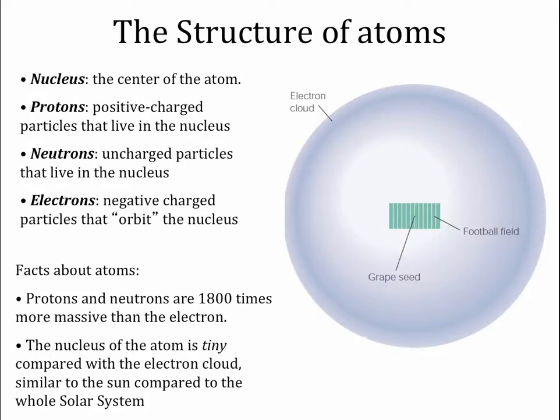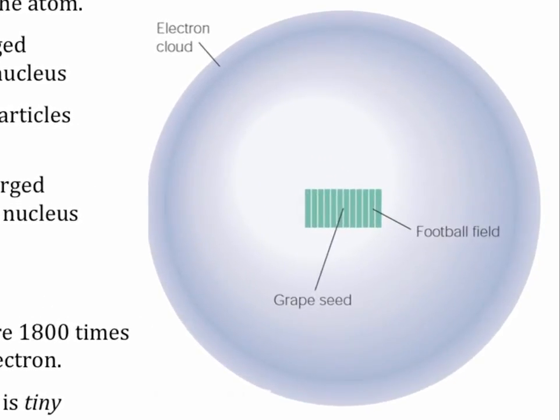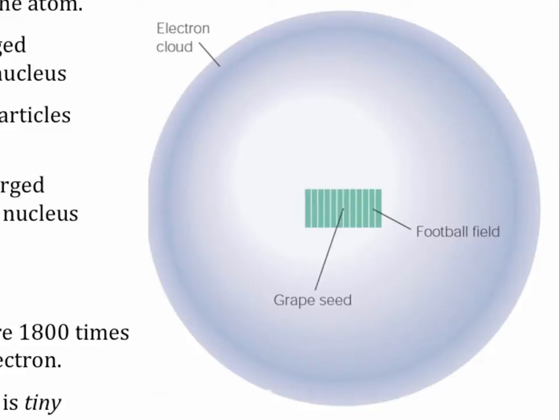Before we can discuss the interactions of light and atoms, let's review what an atom is. Here's a cartoon of an atom on the right and it shows how much empty space there is in an atom. If the nucleus of an atom — that's the center of the atom — were the size of an apple seed, the electron cloud of the atom, the outer part of the atom, would be three or four football fields across. Atoms are mostly empty space.